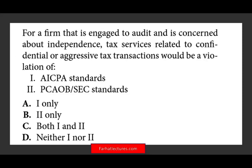The last question: for a firm engaged to audit and concerned about independence, tax services related to confidential or aggressive tax transactions would be a violation of what? As established in the first question, the PCAOB does not allow aggressive tax transactions, so independence would be impaired — it's a violation of PCAOB rules. However, if you are auditing a non-issuer and following the AICPA standard, you can provide aggressive tax services and it does not impair your independence. Therefore, the answer is one only — PCAOB only.